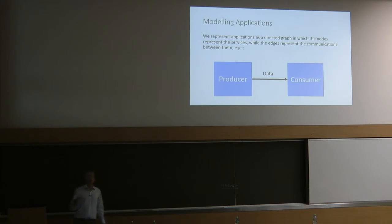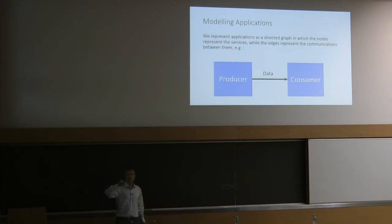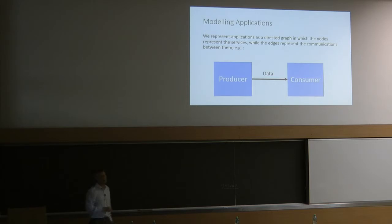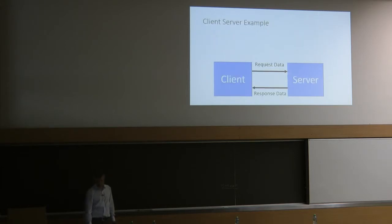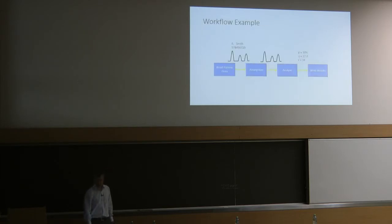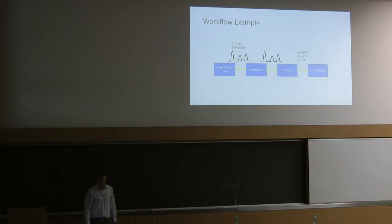We model applications as directed graphs: services are the nodes (vertices) and connections represent data transmission between services (the edges). A simple producer-consumer application has two vertices and one edge. A client-server application has two edges. Workflows of the type used on eScience Central can also be modeled as directed graphs.